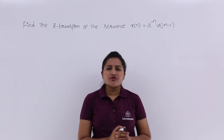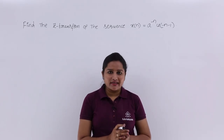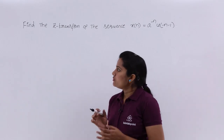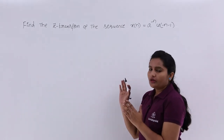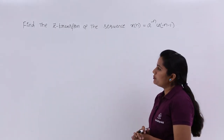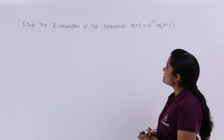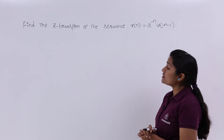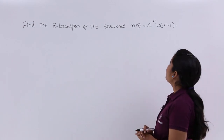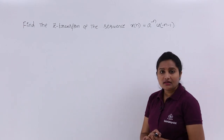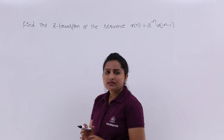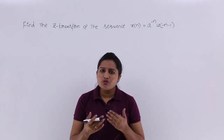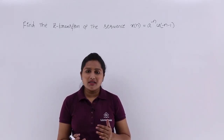In this video we are going to discuss the second model of problems on Z-transform. The problem is: find the Z-transform of the sequence x of n, which is equivalent to a to the power minus n, times u of minus n minus 1. This is the second model of usage of the Z-transform equation.